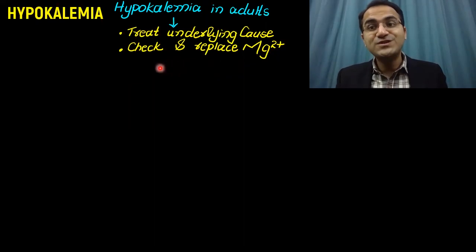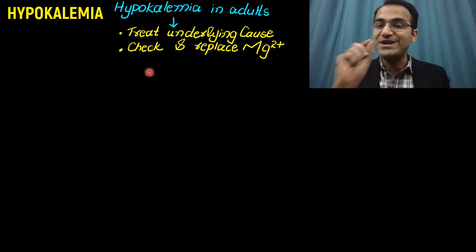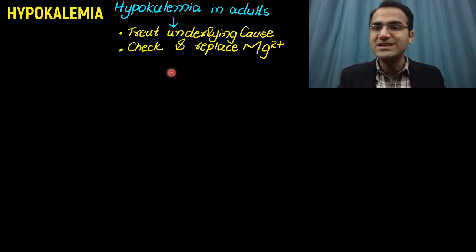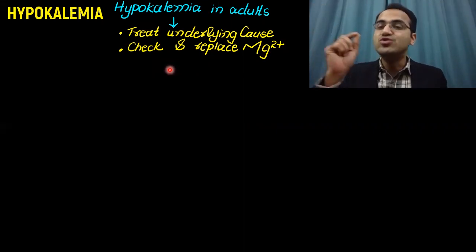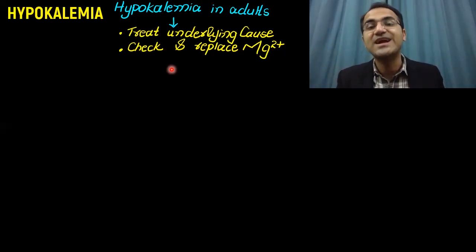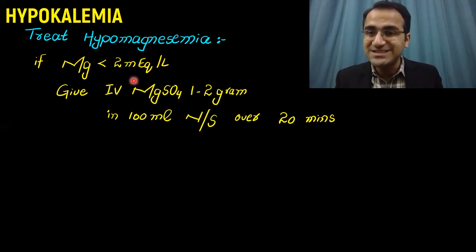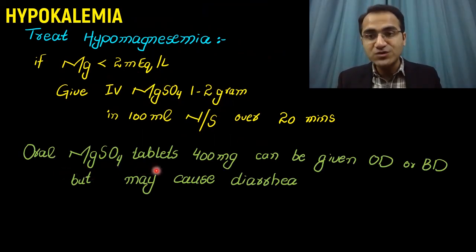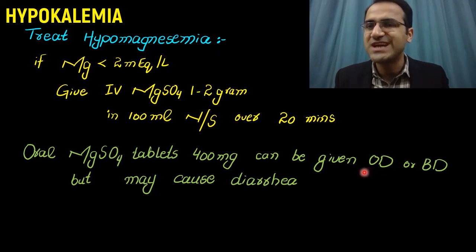Always check and replace magnesium levels in patients with hypokalemia. Magnesium deficiency impairs the sodium-potassium ATPase and causes loss of potassium in urine and the GI tract. If hypomagnesemia is not corrected, replaced potassium will continue to be lost. If magnesium is less than 2 mEq per liter, give IV magnesium sulfate 1 to 2 g in 100 ml normal saline over 20 minutes. Oral magnesium sulfate 400 mg OD or BD is also available, but it commonly causes diarrhea.